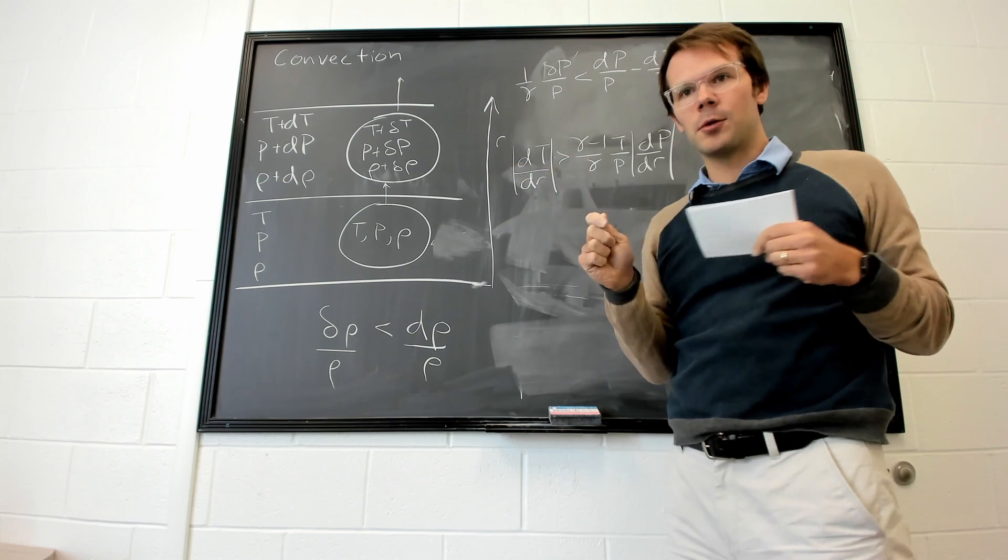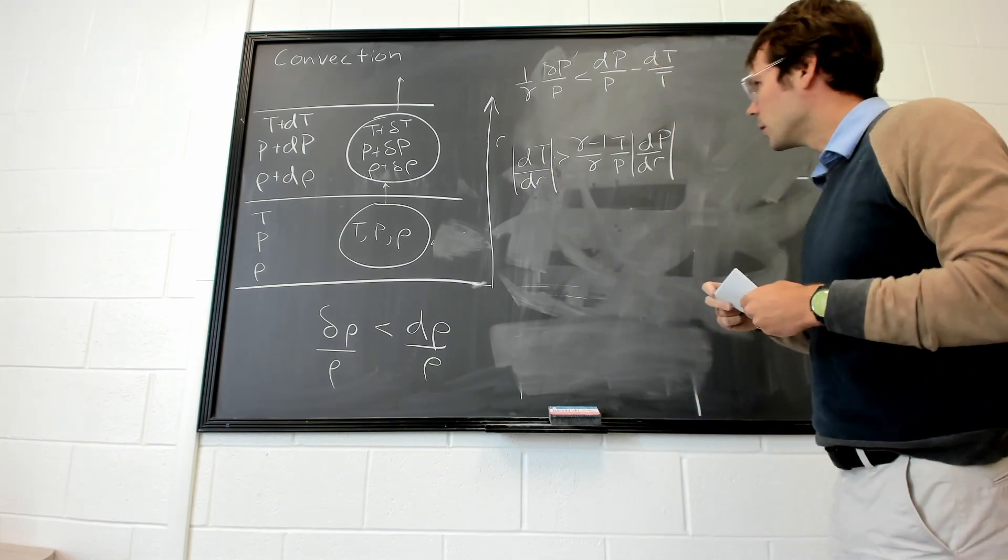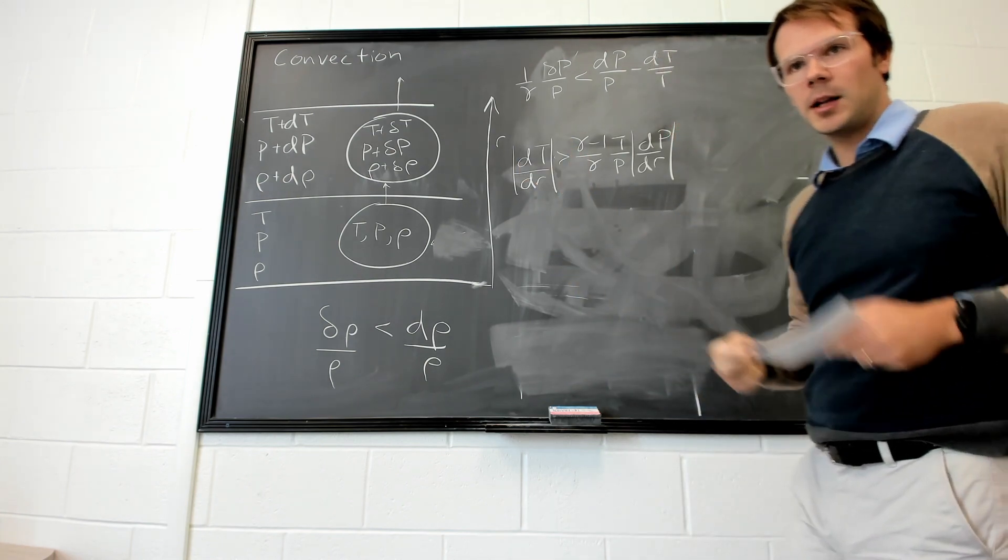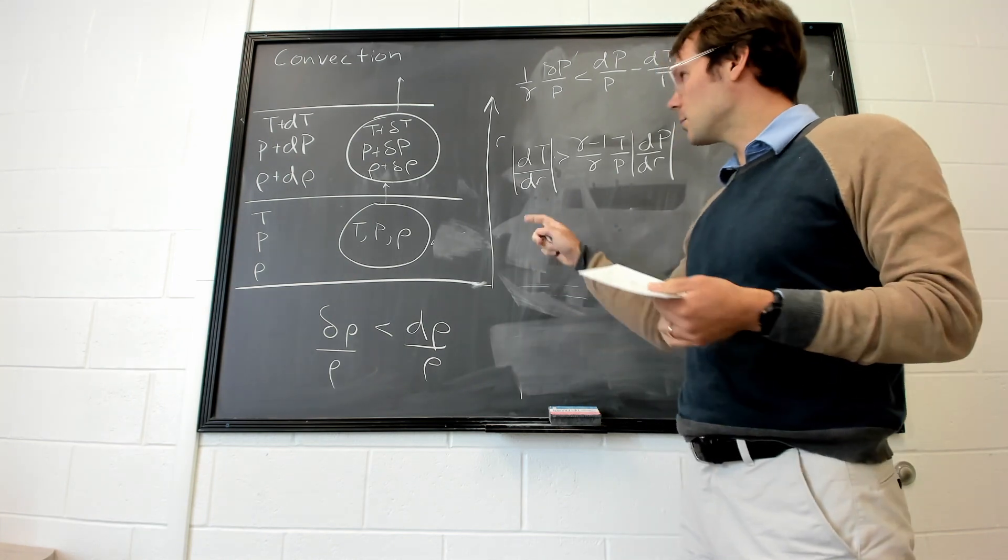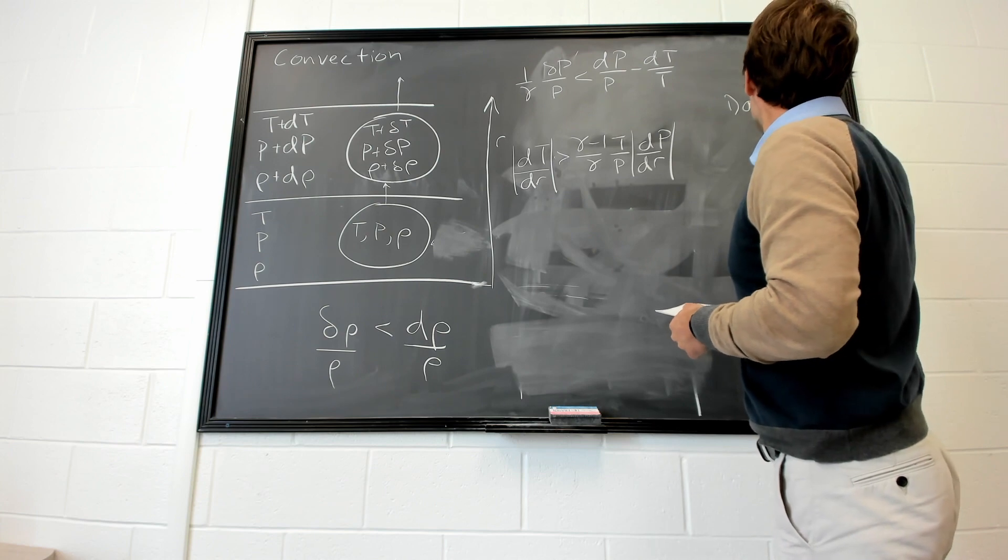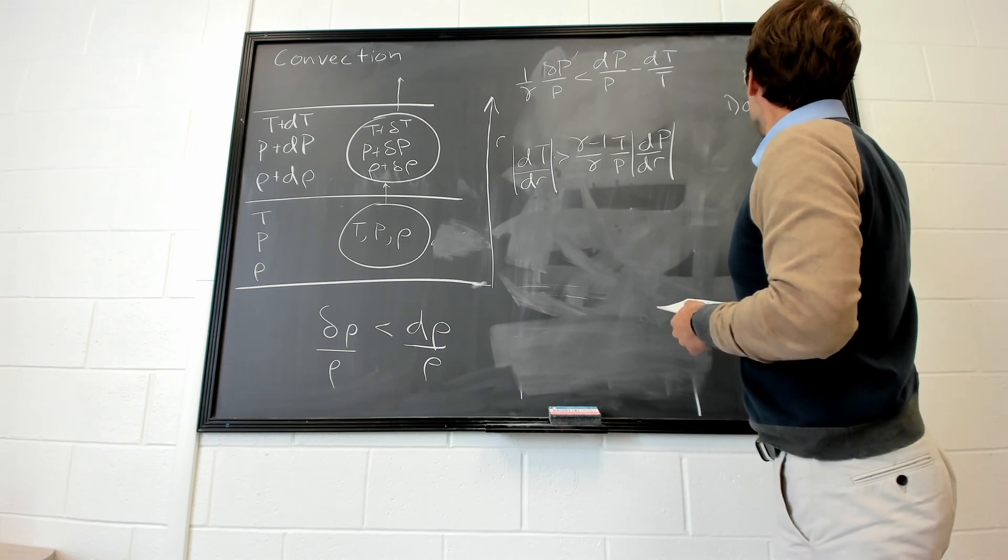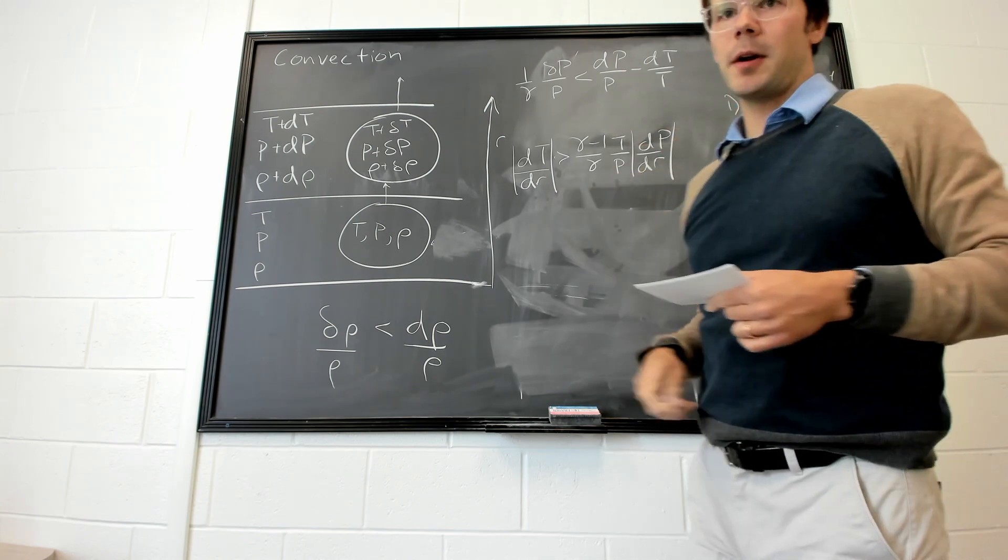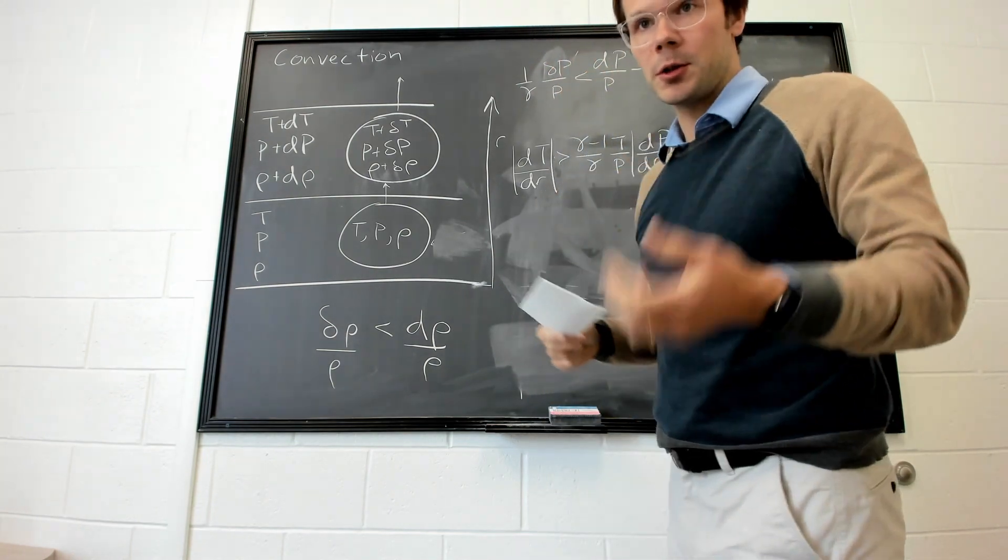Will a photon interact with this bit of matter or not? When there's high opacity, it's hard for radiative transfer to get out. And there needs to be a large temperature gradient for radiative transport to work.